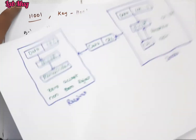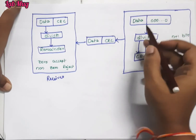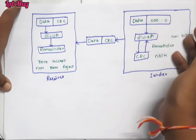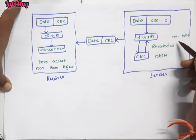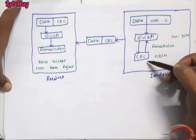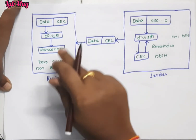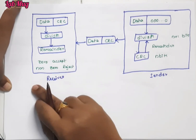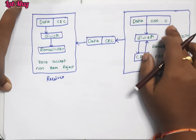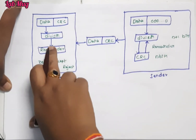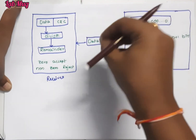This is the first cyclic redundancy checking diagram. We are going to the sender side and receiver side. On the sender side: first take the data, append zeros based on polynomial degree, then perform the division. Based on the remainder, get the CRC. We send both the CRC and data together. On the receiver side: if the remainder is 0, the data is accepted — no errors. If non-zero, the data is rejected — errors are present.